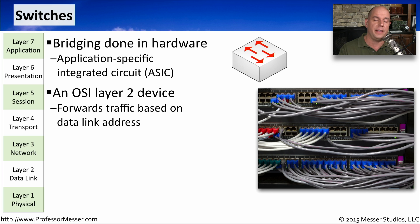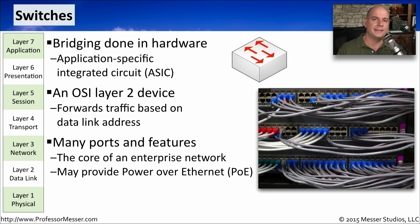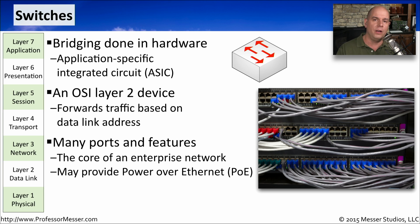Instead, a switch is very specific. If information is destined for a particular interface, it sends that information to only that interface on the switch. Another advantage of switching technology is that you can have a lot of interfaces on a single switch. Some very large enterprise switches can have hundreds of interfaces on one single chassis, which makes it perfect for the middle of a network or data center. Some switches can also provide power, so you can plug in your VoIP phone or an access point, and all of the power for that device comes directly from the switch.